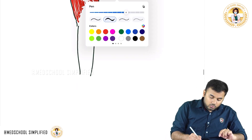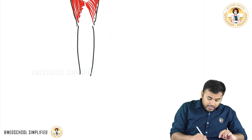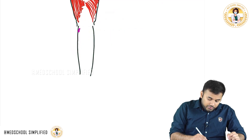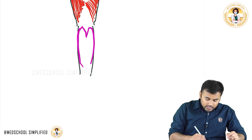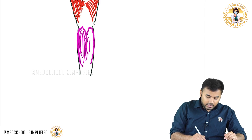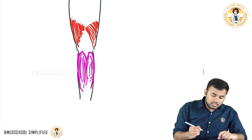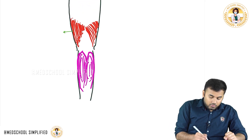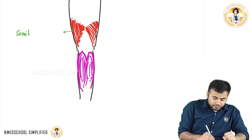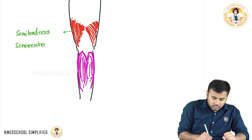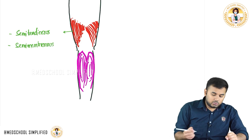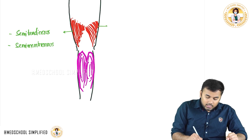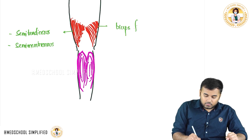When you come a little bit down, here you have a muscle called gastrocnemius. There are two heads of gastrocnemius — one is called the lateral head and another one is called the medial head. So in total, what are the muscles here? We have semitendinosus, semimembranosus, biceps femoris — the long head — and the two heads of gastrocnemius. That gives us four muscles forming the borders.